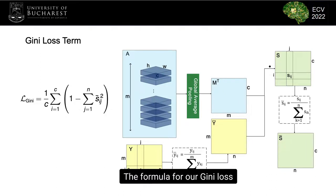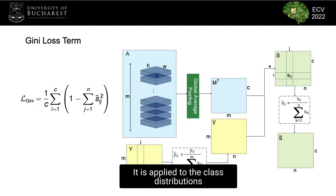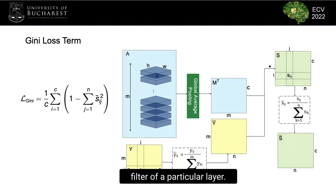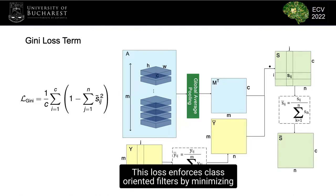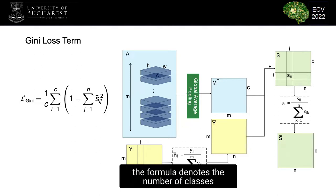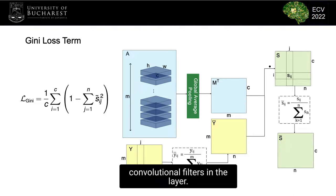The formula for our Gini loss is illustrated on the left side. It is applied to the class distributions, denoted by s-bar, computed for each convolutional filter of a particular layer. This loss enforces class-oriented filters by minimizing the Gini impurity of these distributions. N in the formula denotes the number of classes and C denotes the number of convolutional filters in the layer.